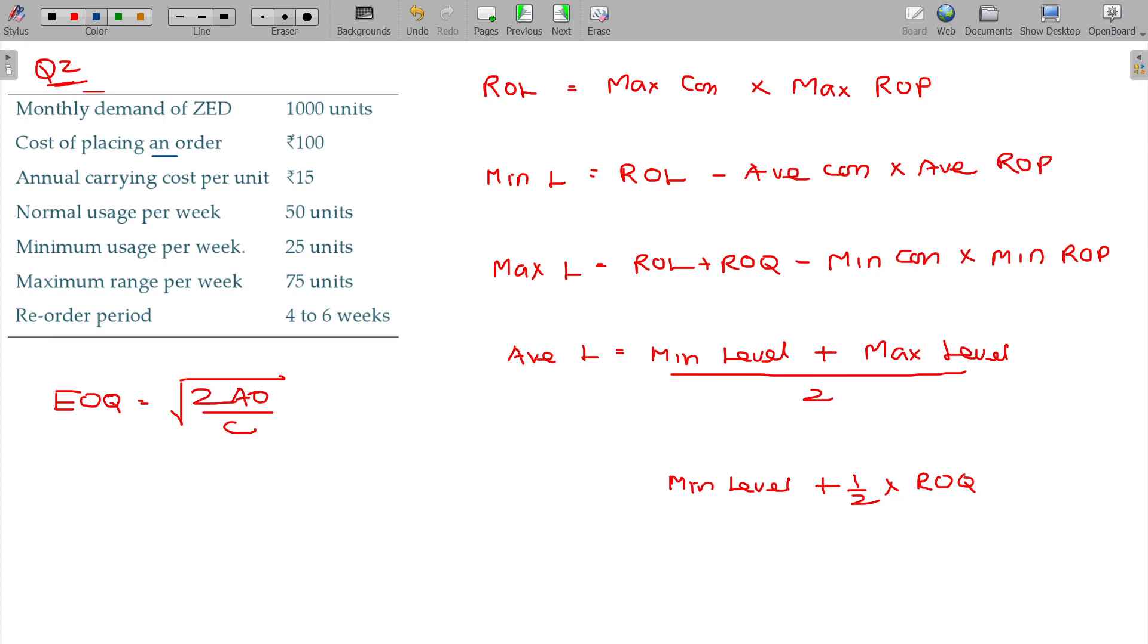Cost of placing an order being $100. Carrying cost per unit per annum C, $15. Normal usage per week, 50 units. Minimum 25, maximum 75. Reorder period 4 to 6 weeks. Minimum 4, maximum 6, 5 will be the average.